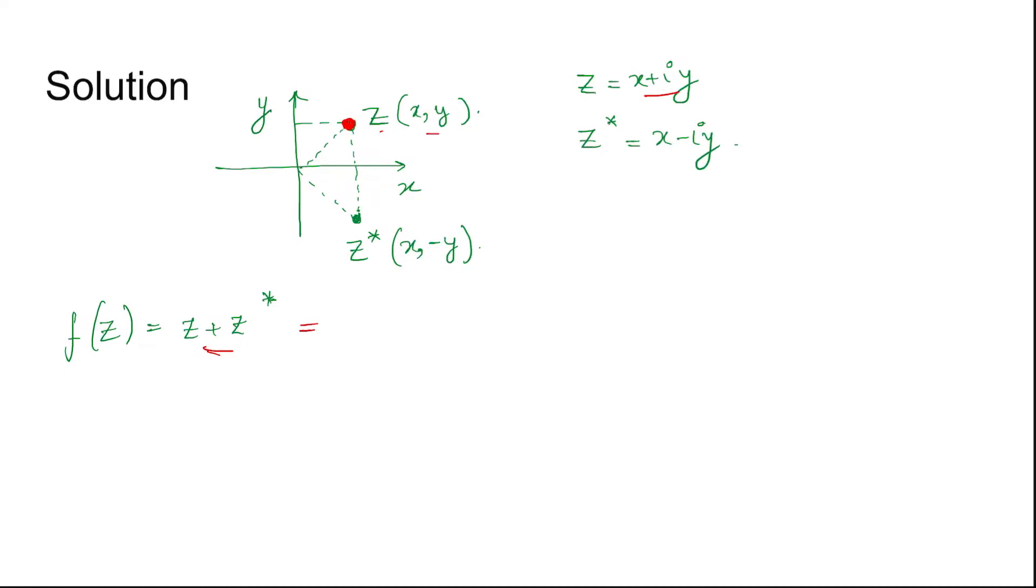Now f(z) is z plus z star. This is the complex function given in the question. Now z is equal to x plus iy and z conjugate is equal to x minus iy.